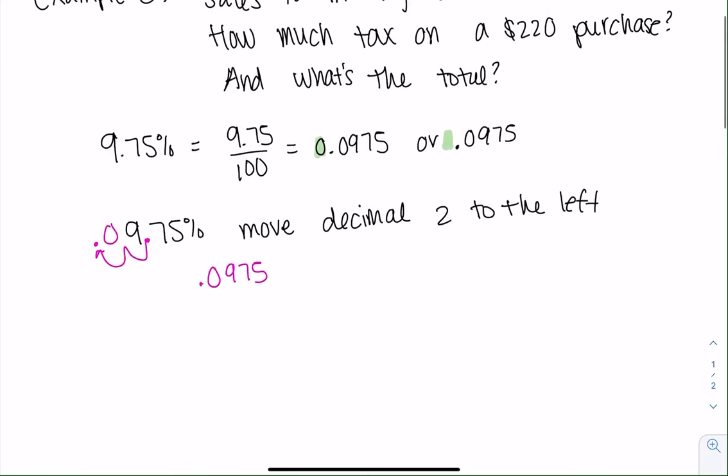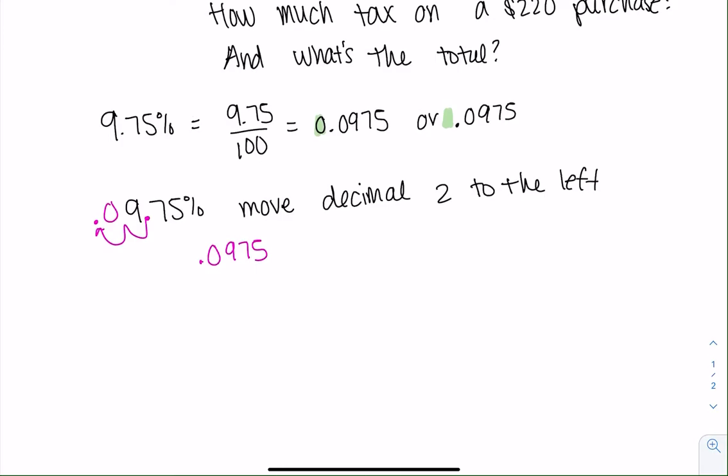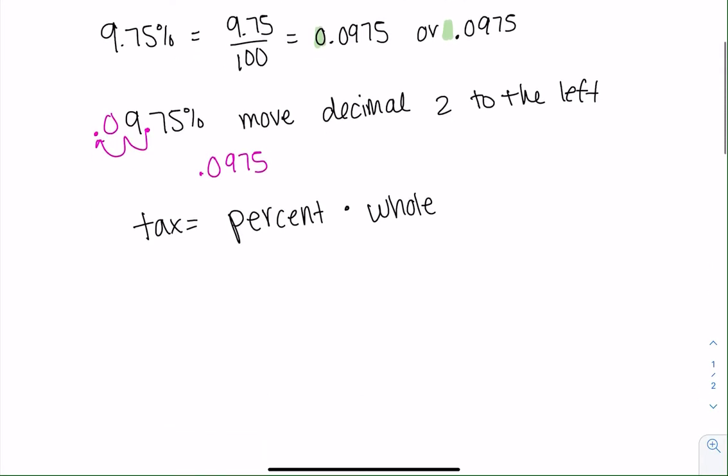And so we're going to now find tax. So tax would be the part. And so we'll just do percent times whole from that formula from above. The whole would be the whole purchase, so that's $220. So we'll take the percent and times by 220. Again, we can just type this on our calculator. Most of us aren't going into classes where we're doing things by hand. So we're going to go ahead and multiply, and I get 21.45. This is only the tax, not the purchase.